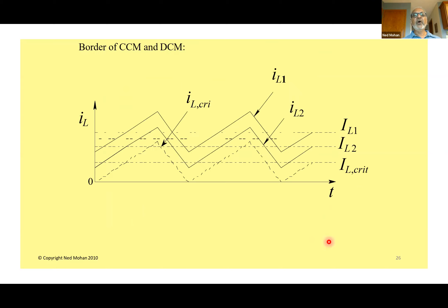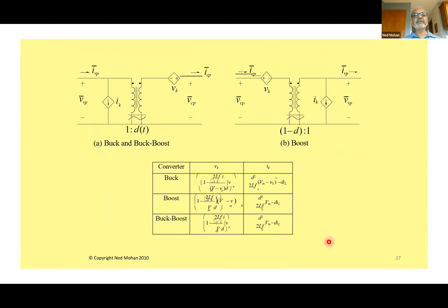For discontinuous conduction mode (DCM): if the output load is decreased, any of these converters will reach a point where the current becomes discontinuous — like a switch getting stuck in the middle. We can represent DCM using the same ideal transformer, but augmented with a dependent current source and a dependent voltage source. Expressions for those sources are given for buck, boost, and buck-boost.